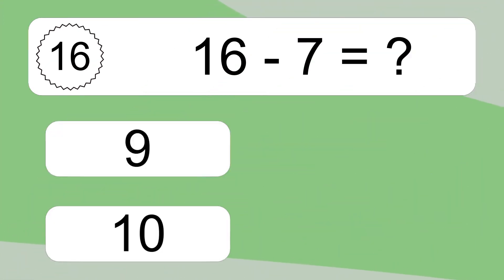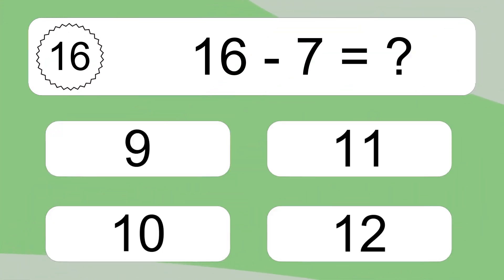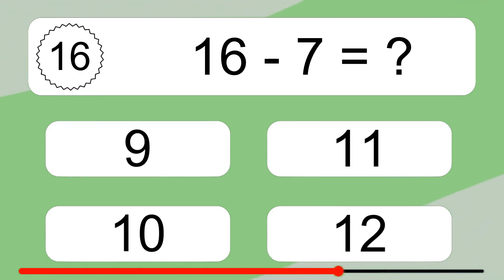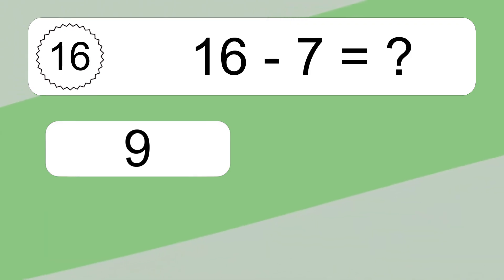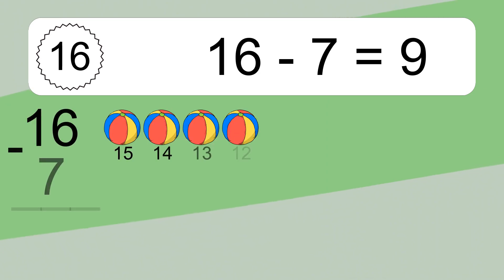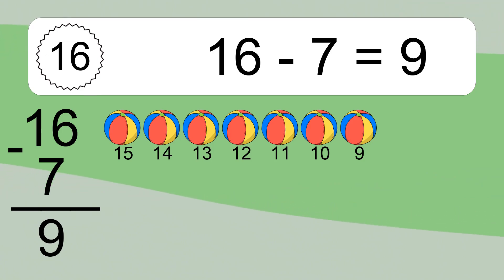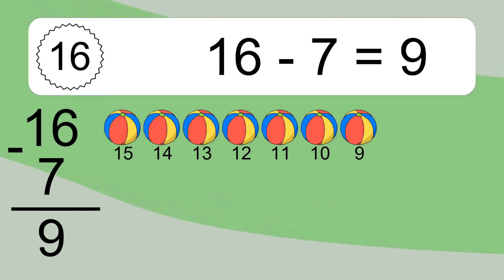16 minus 7 equals 9. Let's count it: 15, 14, 13, 12, 11, 10, 9.